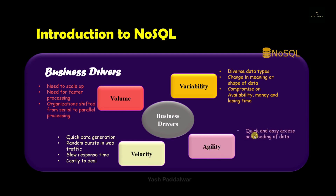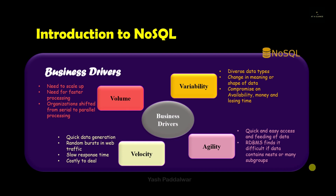The last business driver is agility. Even if you have good resources for storage and processing, if the time taken by the database to retrieve or feed data is very high, it's not an optimal database. RDBMS databases contain many relations for every attribute, and sometimes the total number of nests and relations among different attributes becomes so complex that it is very difficult for RDBMS to retrieve even a small amount of data, which decreases response time. So companies and organizations shifted to NoSQL because it supports controlling big data as well as real-time streaming data.